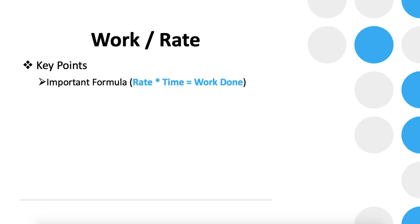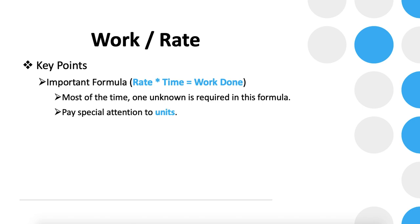The third key point is the formula: rate × time = work done. In most cases, one unknown is required. Pay special attention to units. Also, there could be scenarios where machines break down mid-job — for example, three machines working simultaneously, then after one hour one breaks down, and after another hour another breaks down. In that scenario, after each interval you need to apply the formula again.